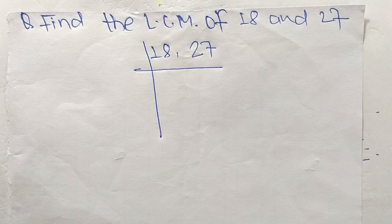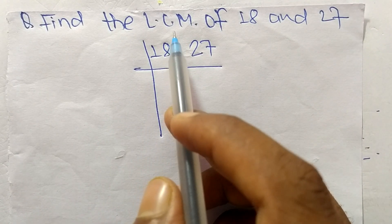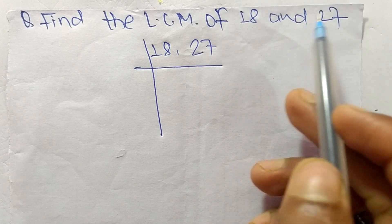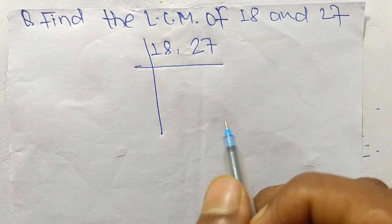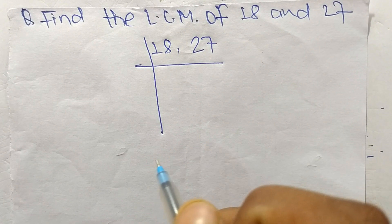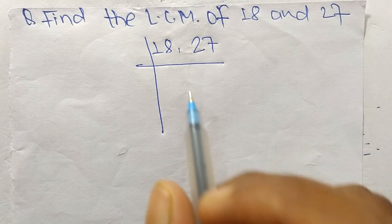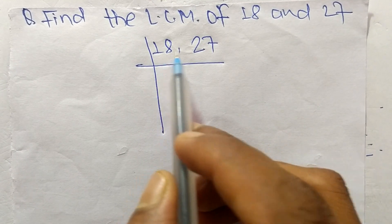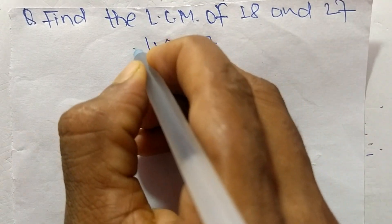So today in this video we shall learn to find the LCM of 18 and 27. To find LCM, first we have to choose the lowest number that can exactly divide 18 and 27, so the number is 3.